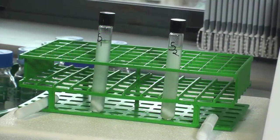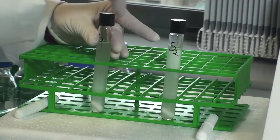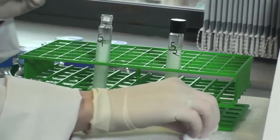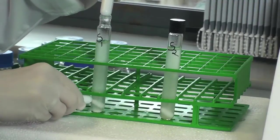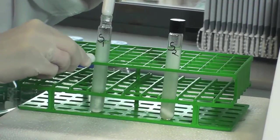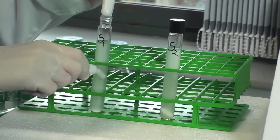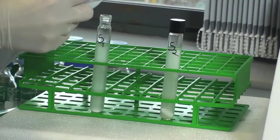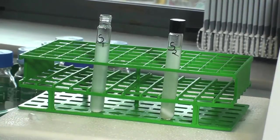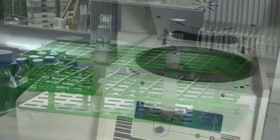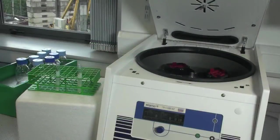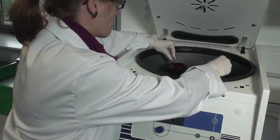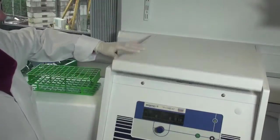Remove the caps from the culture tubes and then use magnets to remove the magnetic stirrer bar from the tube. Transfer the tubes to a bench centrifuge and centrifuge the tubes at 3000 RPM for 10 minutes.